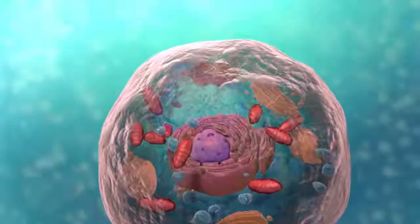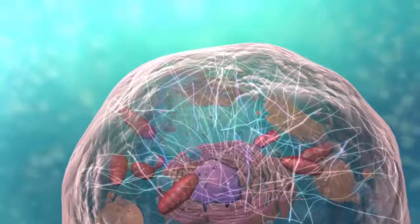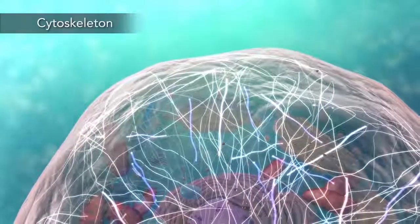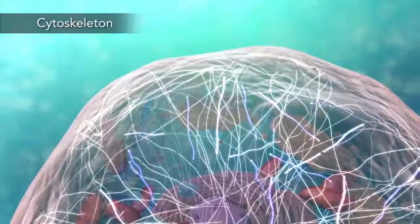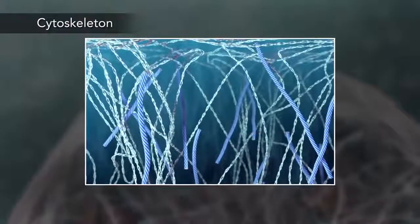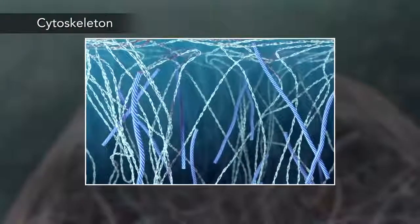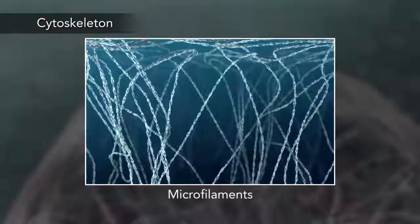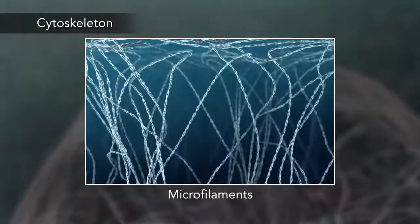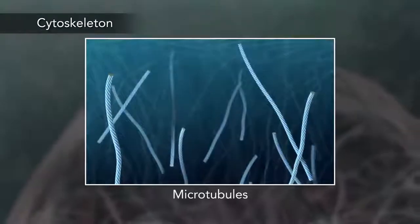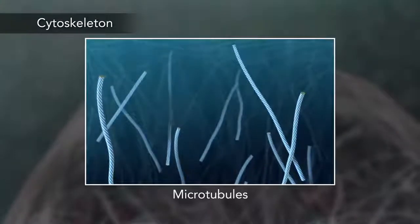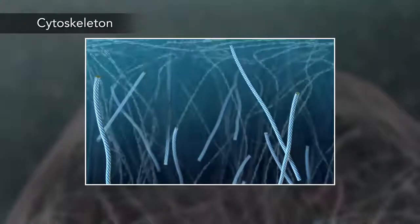The cell maintains its shape through a cytoskeleton. The cytoskeleton includes thread-like microfilaments, which are made of protein, and microtubules, which are thin, hollow tubes.